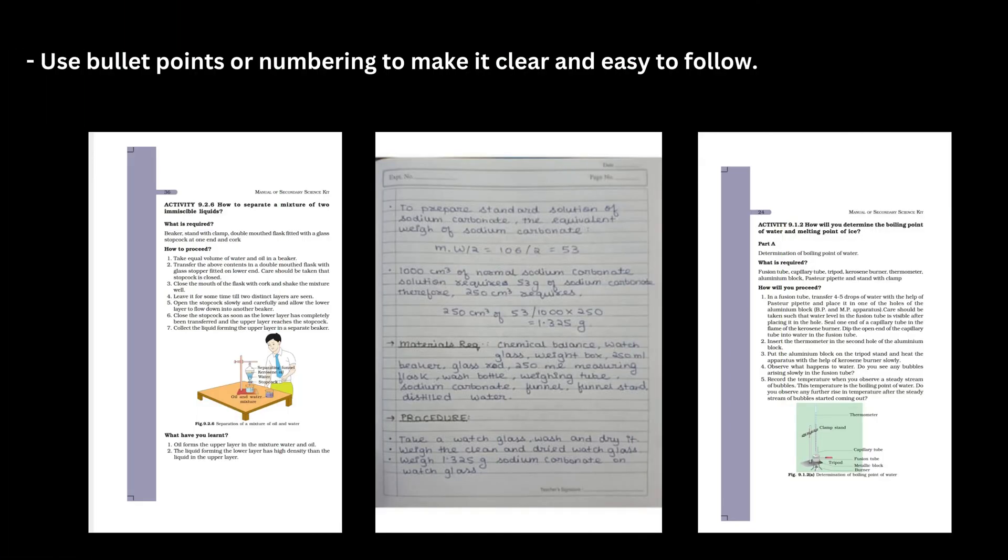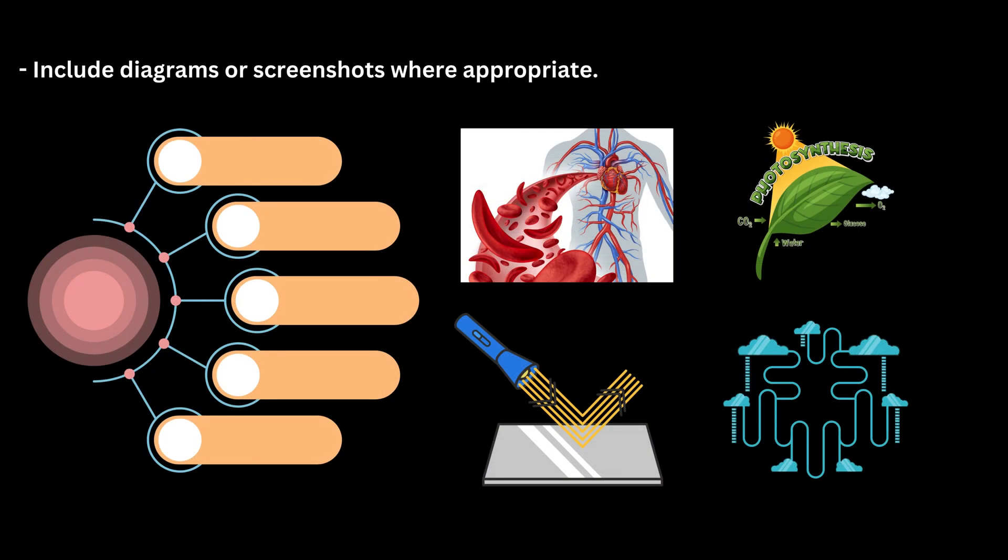Procedure: step-by-step instructions on how to perform the experiment. Use bullet points or numbering to make it clear and easy to follow. Include diagrams or screenshots where appropriate.